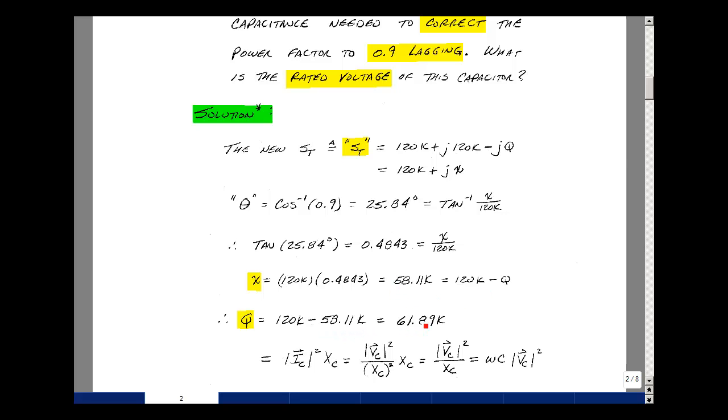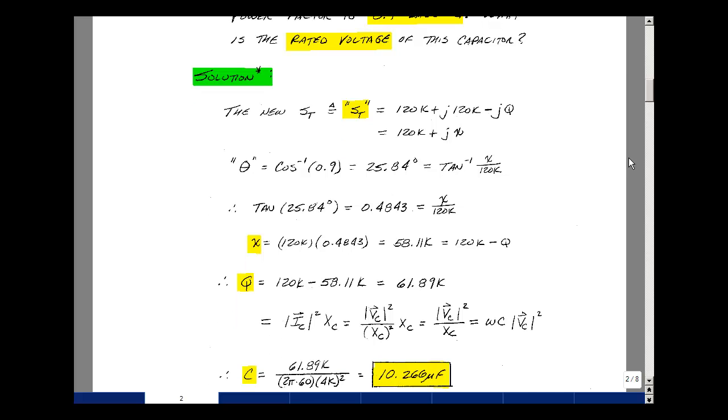Then from page 5 in the chapter 16 notes, we showed that the value of Q was the magnitude of the capacitor current squared times the reactance of the capacitor. But that current is also the magnitude of the voltage squared divided by the reactance squared. One of these cancels, and I'm left with X of C, which is 1 over omega C.